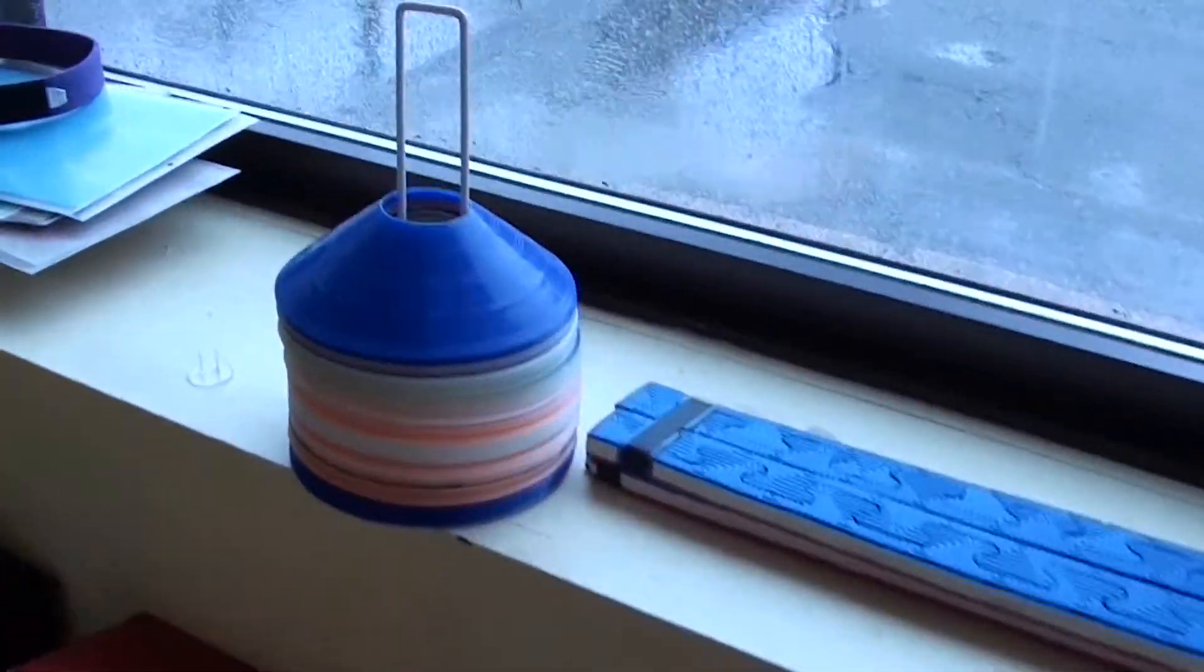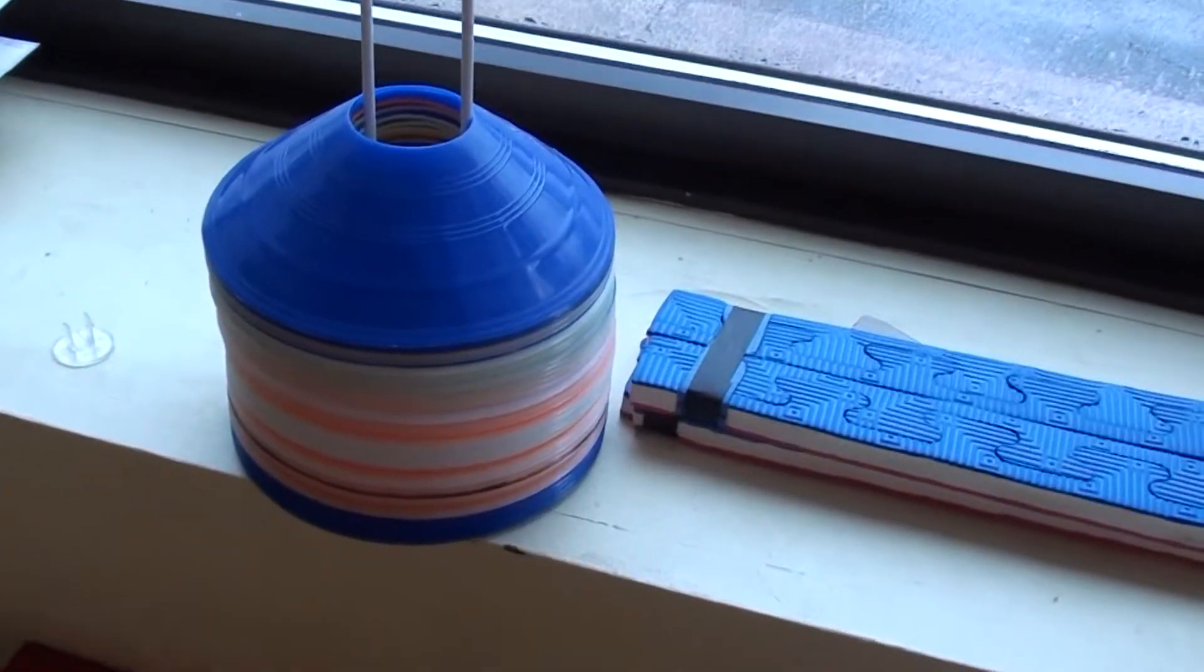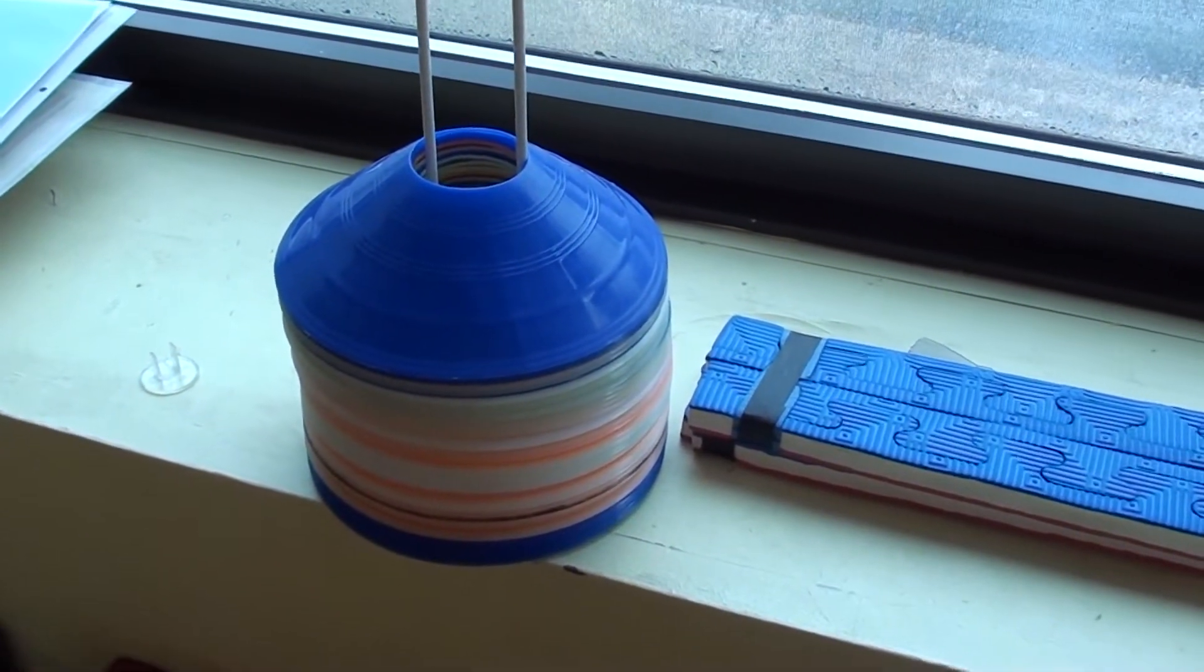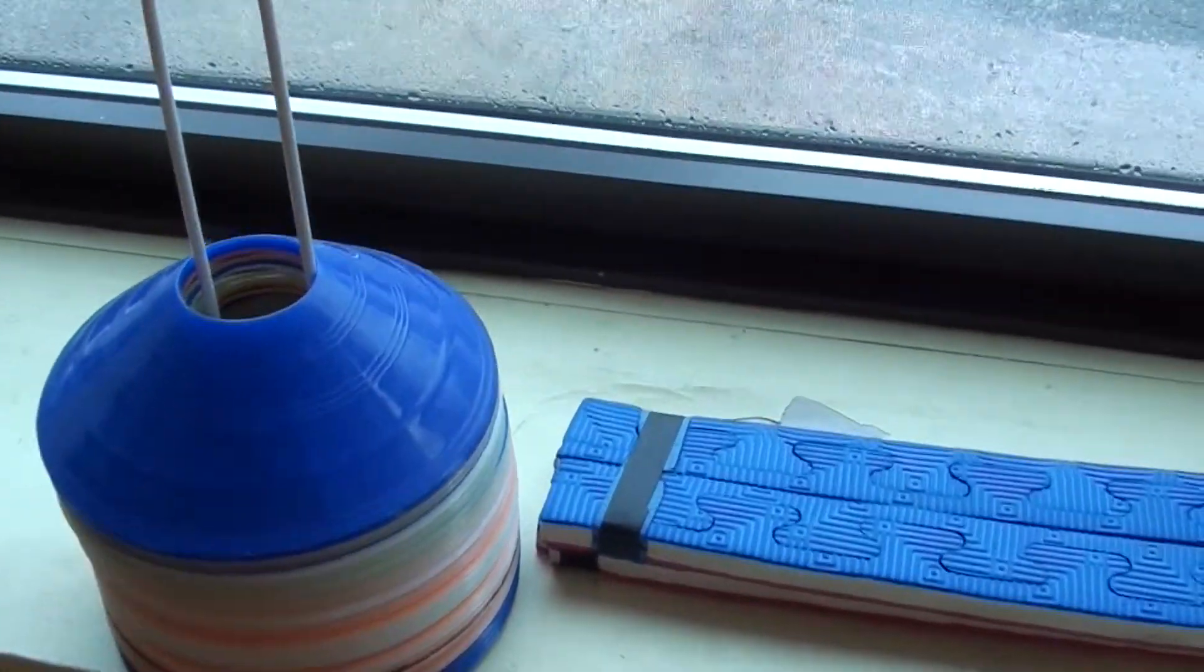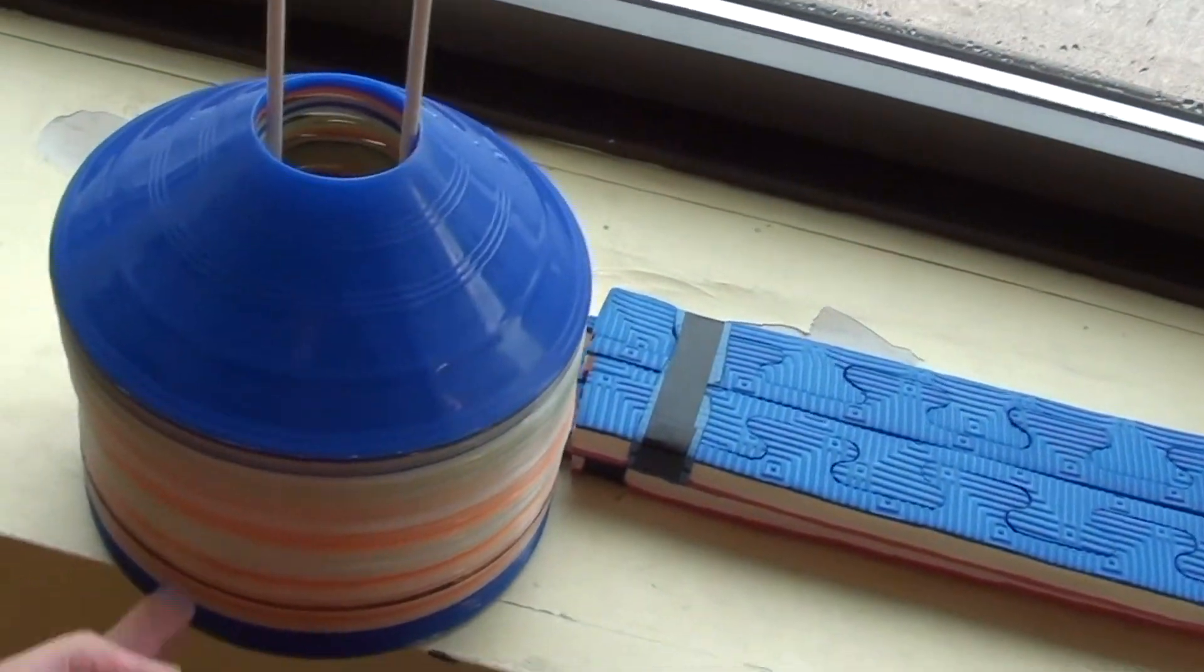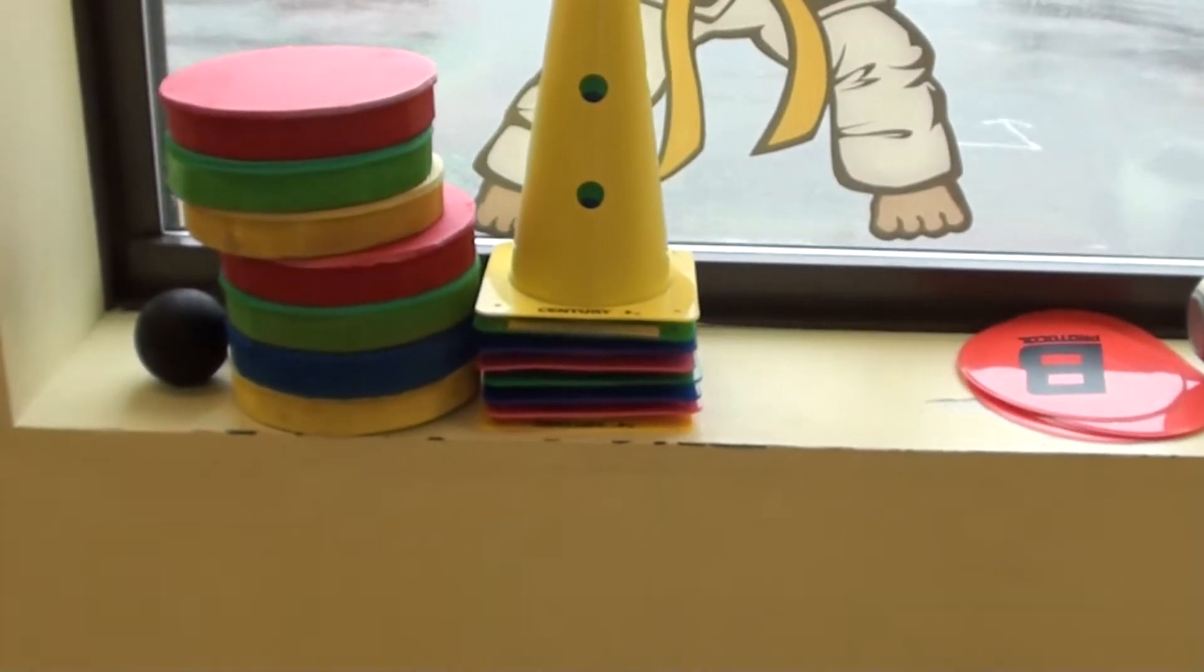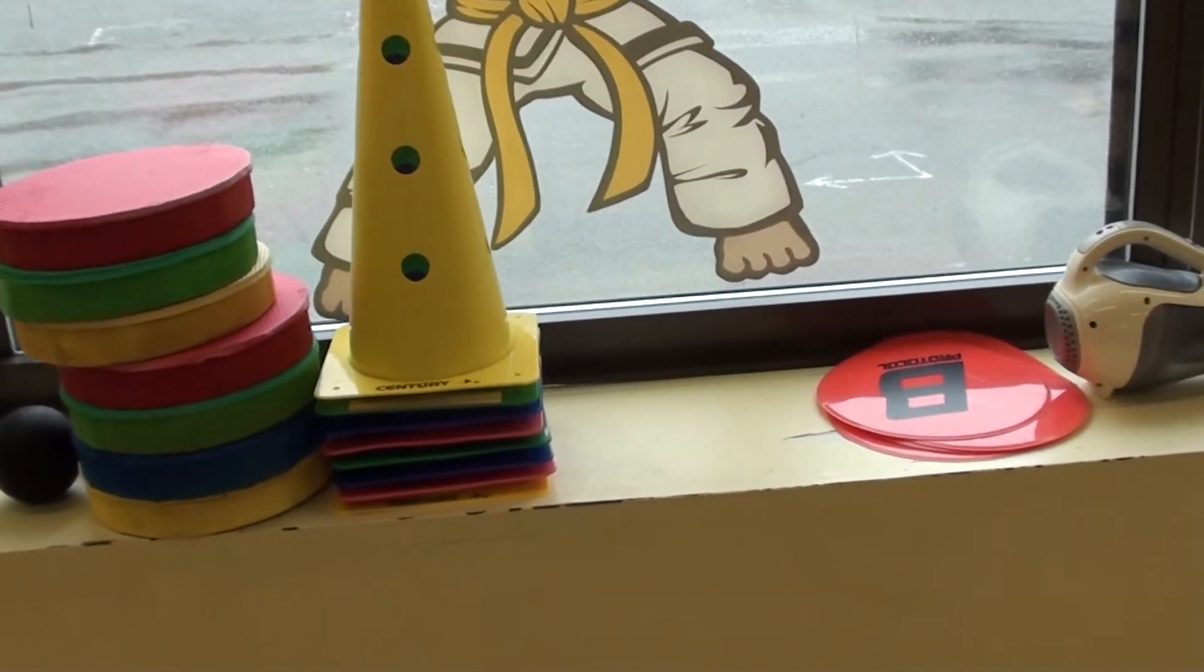We have cones. So you can make an obstacle course and have your kids run through it. If you don't have cones, that's okay. What can you use for cones? Maybe some paper cups, a piece of clothing. Just about anything that you could put on the ground would work as a cone.